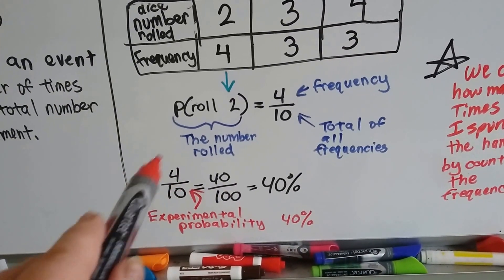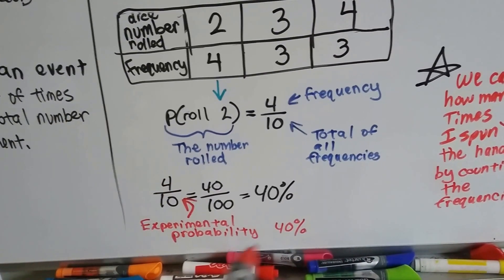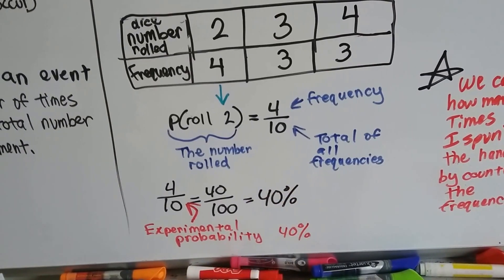So, the experimental probability is four tenths. It's the frequency over the total of all the frequencies. It's the number of times the event occurs over the total number of trials of the experiment. That, right here, the four tenths, is the experimental probability. This is the percentage of times that it happened.